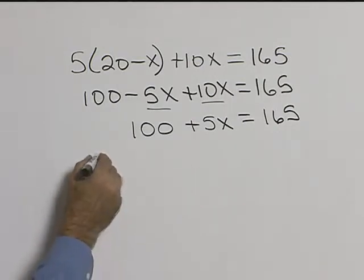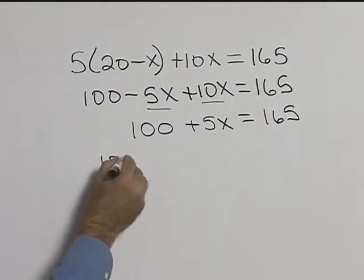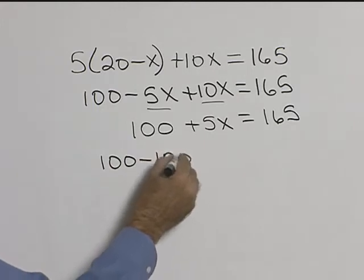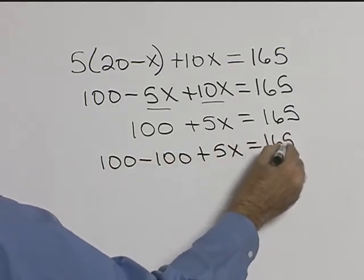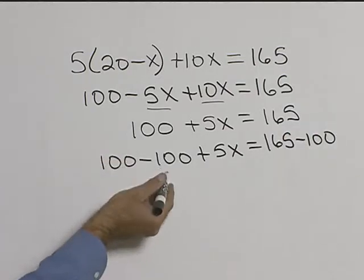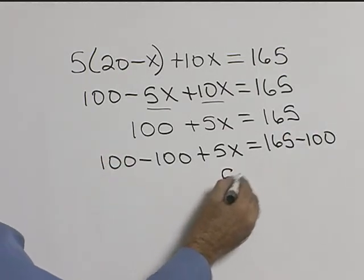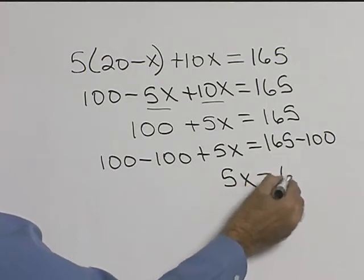Well now let's get rid of our 100. So this is a positive 100, so we'll subtract 100 from both sides. 100 minus 100 will be 0. We're left with 5x equal to 65.